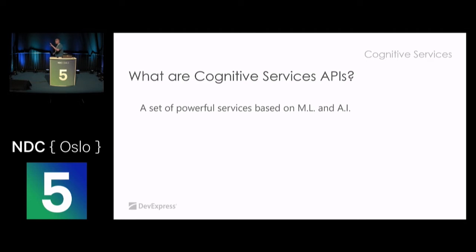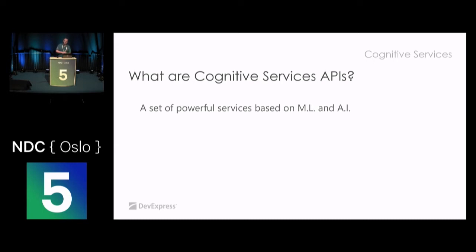Do we have any machine learning experts here, or people who have heard of it? Machine learning is basically - as you remember from the definition of cognition - experience. Machine learning is able to draw conclusions out of huge amounts of data. The more data you have, the more experience, the better a prediction can be made. And AI is on top of that because it uses the experience that comes with machine learning. The Cognitive Services is a collection of services - not just one function, but a whole set.